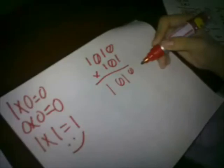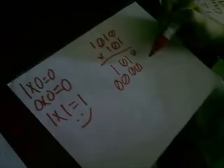Now do you understand? Here is a simple binary multiplication problem: 1, 0, 1, 0 times 1, 0, 1. As stated, 0 times 1 equals 0, 1 times 1 equals 1, 0 times 1 equals 0, and 1 times 1 equals 1. Next, 0 times 0 is 0 — you can put 0 there.